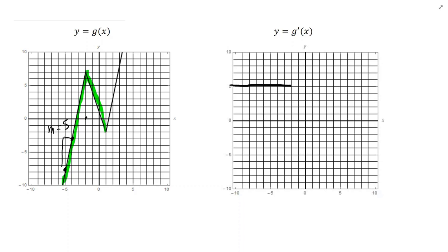The second piece of g is also a straight line. Its slope is negative because it's decreasing, and again it's constant because it's linear. Looking at two points, it looks like we go down 6 over 2, so the slope here is negative 3. So between x equals negative 2 and x equals positive 1, the slope is negative 3.